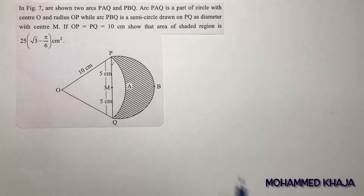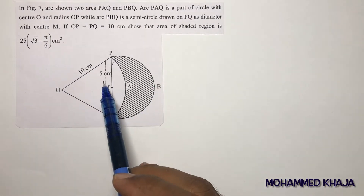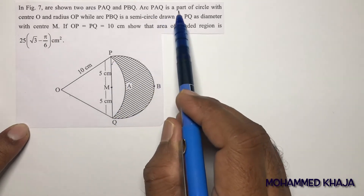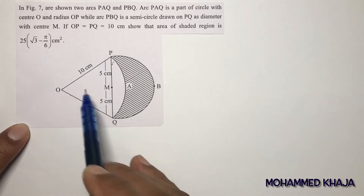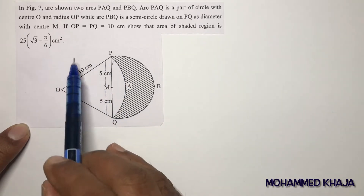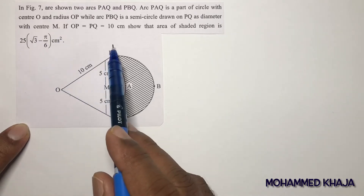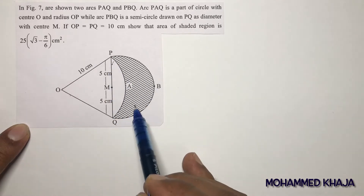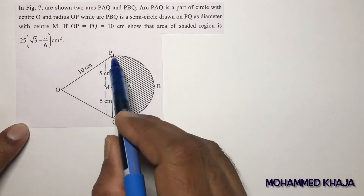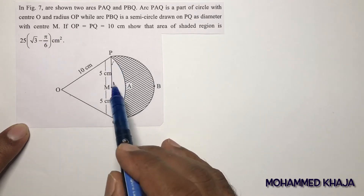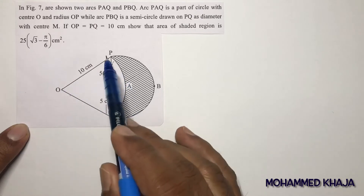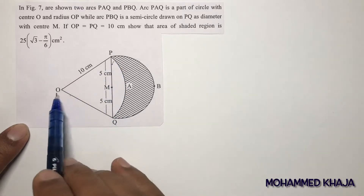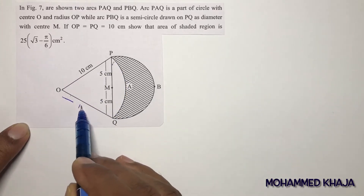In figure two, there are arcs PAQ and PBQ. Arc PAQ is a part of a circle with center O, giving a sector with radius OP. Arc PBQ is a semicircle, where PQ is the diameter with center M. OP is 10, OQ is 10, and PQ is also 10 centimeters.